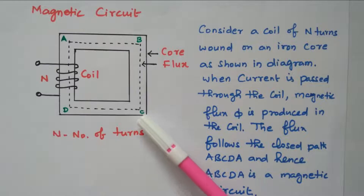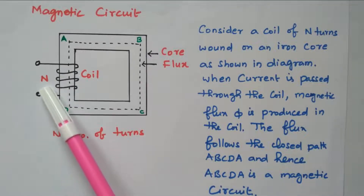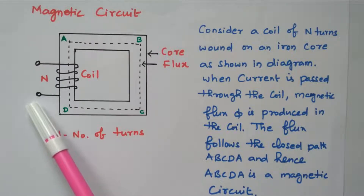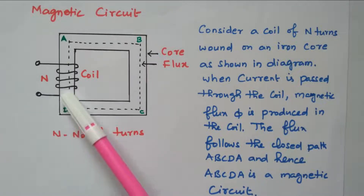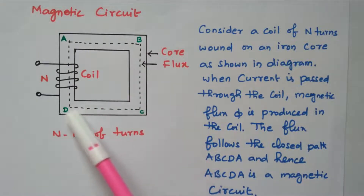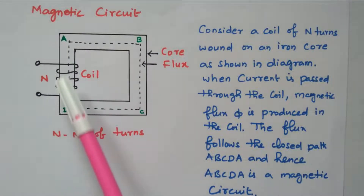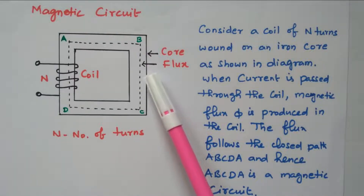Consider an iron core over which a coil is wound with N number of turns. When the coil is energized with a voltage, current flows through the coil. Due to the rate of change of current, flux is produced in the coil. That flux follows a closed path through the core — in a square shape, the flux follows the path ABCDA. This closed path ABCDA is nothing but a magnetic circuit.